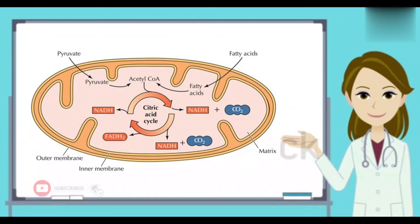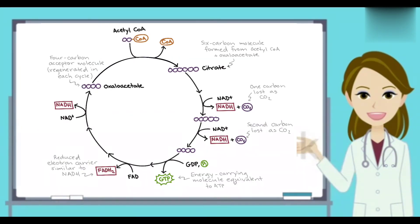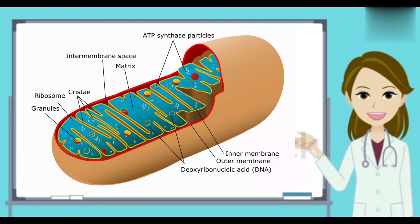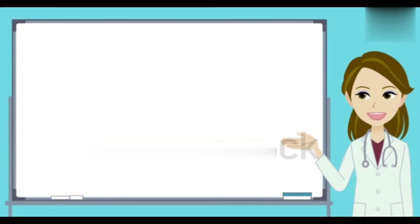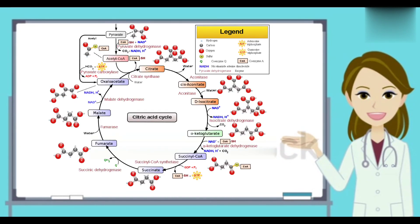The Krebs cycle takes place in the mitochondria. One ATP is formed in a single citric acid cycle, while two ATPs are formed from a single molecule of glucose, since two molecules of pyruvate are formed from one molecule of glucose. So we get a total of 2 ATP from the Krebs cycle per glucose molecule.